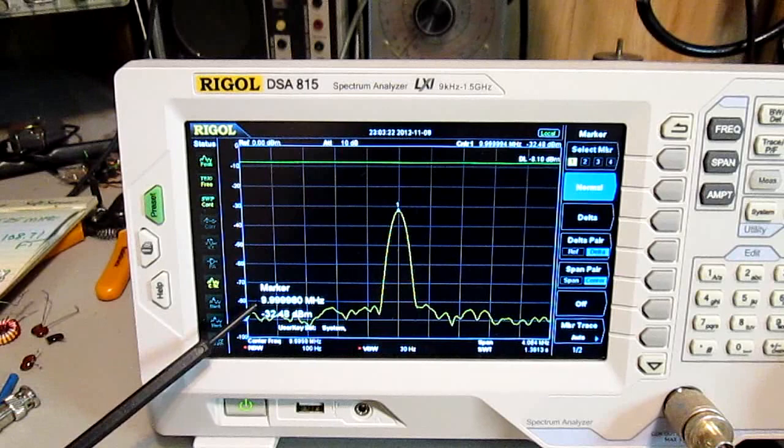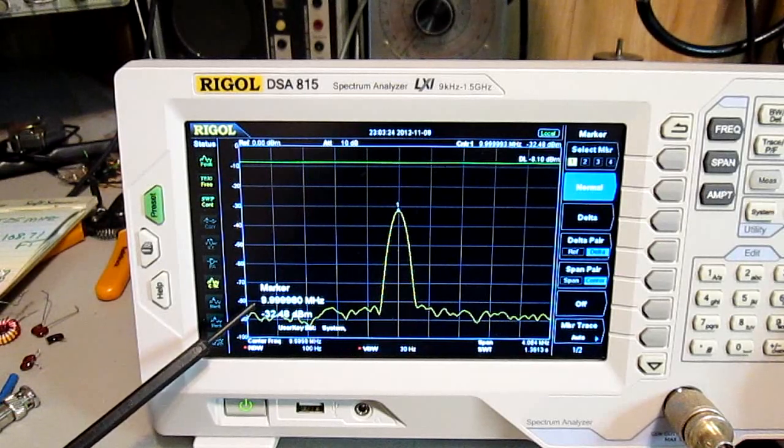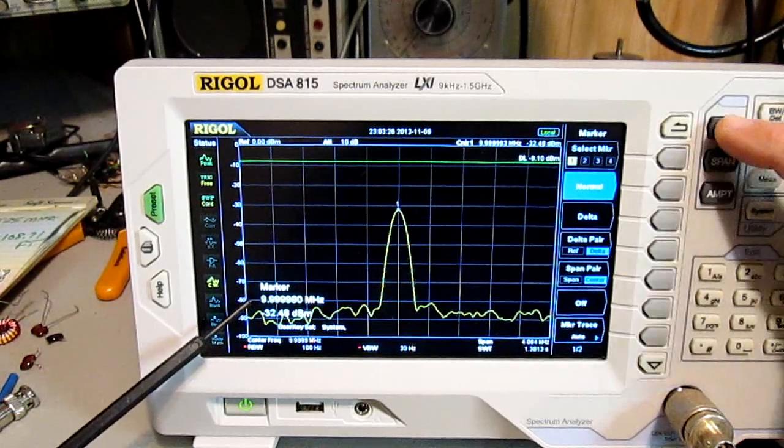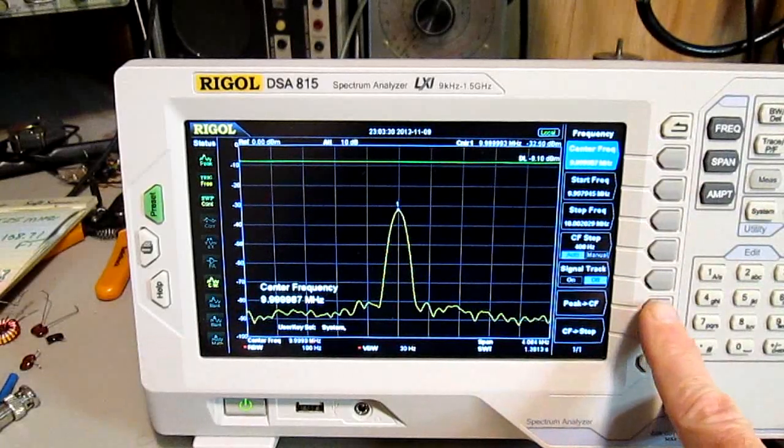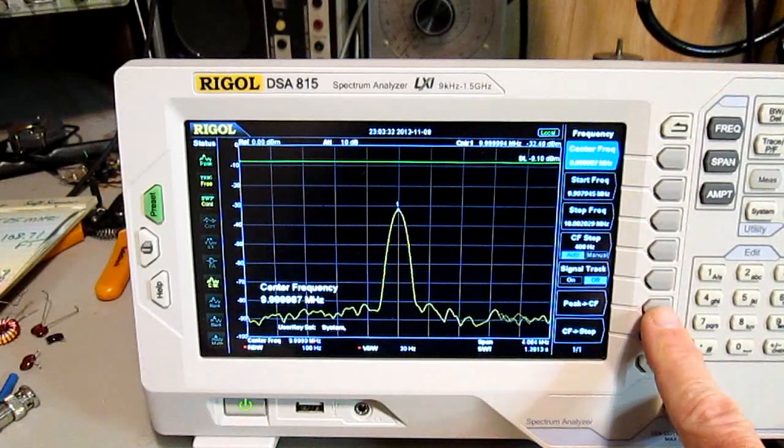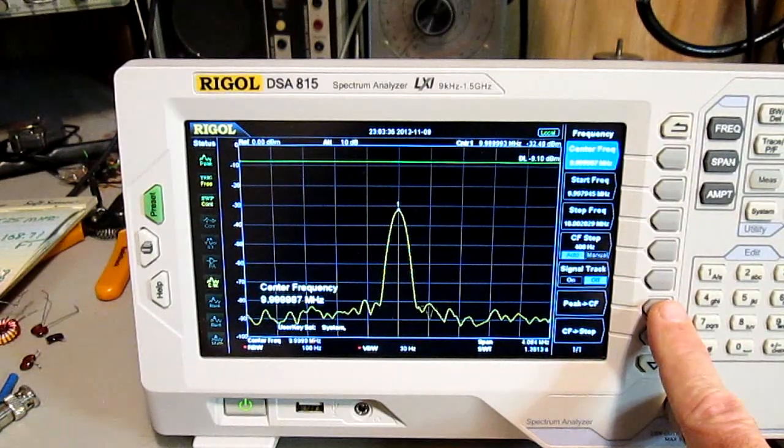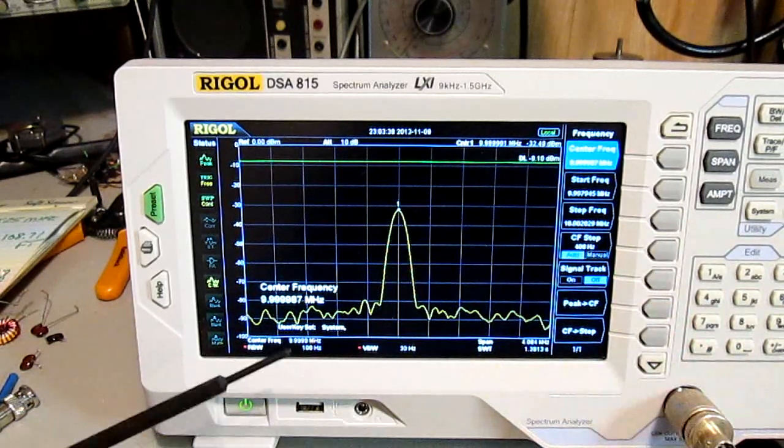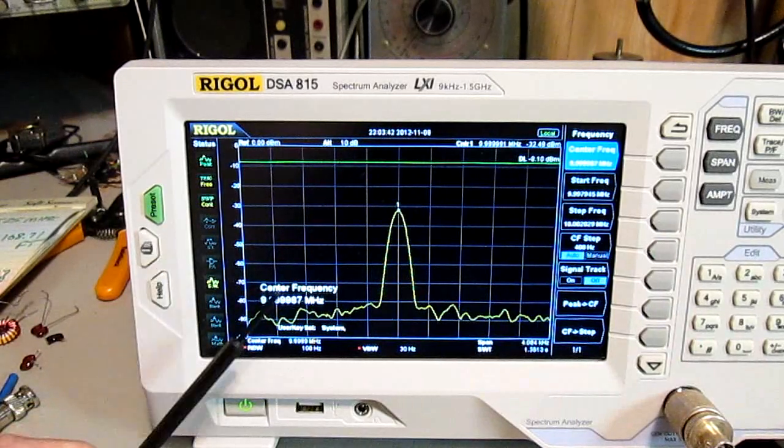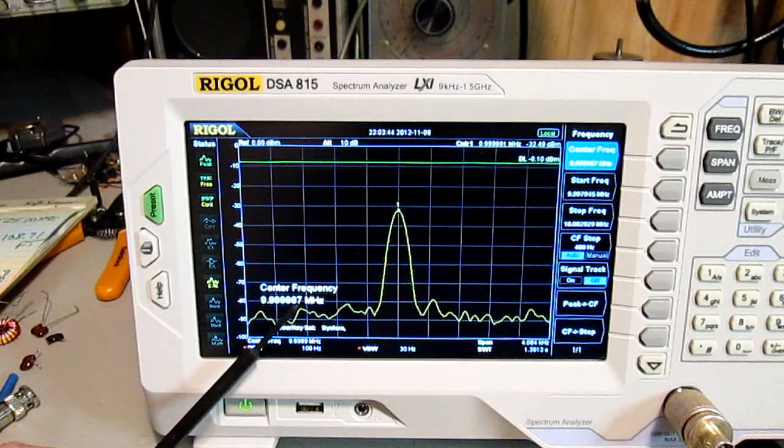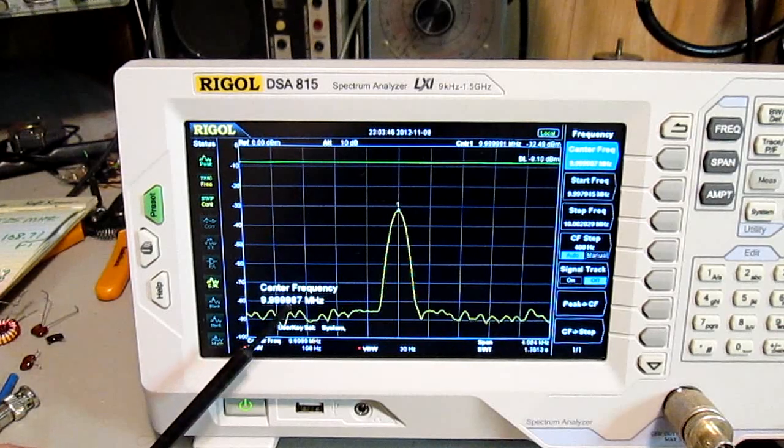And then I had noticed there was a function called frequency. Yes, right here. It's peak center frequency, so it takes the peak and locates it and moves it to the center frequency, which is at this point now it's saying it's 9.999987, so it's 13 hertz low. I've just powered the oscillator up.